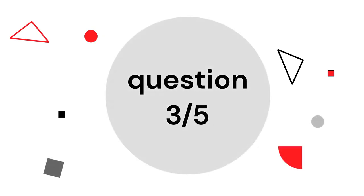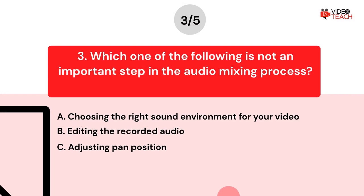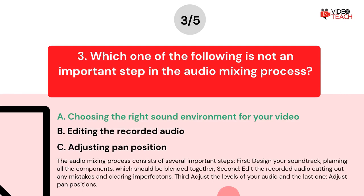Question number three. Which one of the following is not an important step in the audio mixing process? Option A: Choosing the right sound environment for your video. Option B: Editing the recorded audio. Option C: Adjusting pan position. The correct answer is A. The audio mixing process consists of several important steps: first, design your soundtrack, planning all the components which should be blended together; second, edit the recorded audio, cutting out any mistakes and clearing imperfections; third, adjust the levels of your audio; and fourth, adjust pan positions.